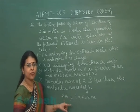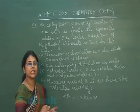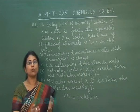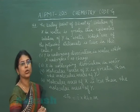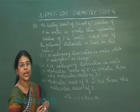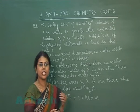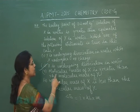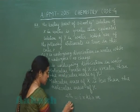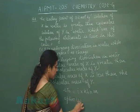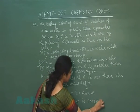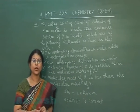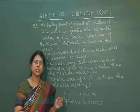If the elevation in boiling point of x is greater than y, it means the number of particles in x is more than in y. This is possible only if x undergoes dissociation in aqueous medium. So option 2 is correct — x undergoes dissociation, which causes its boiling point to be higher than that of y.